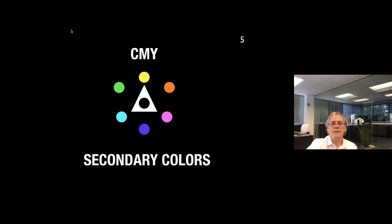The tertiary colors are formed by mixing the primary color with the secondary colors, and we'll get the yellow-orange, the red-orange, the red-violet, the blue-violet, the blue-green, and the yellow-green.